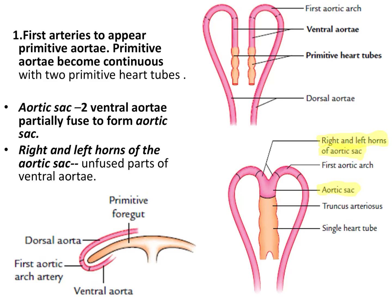The first arteries which develop in our body are the primitive aorta. There are two primitive aorta, right and left, and these two primitive aorta are continuous with the primitive heart tube. This primitive aorta is divided by a primitive foregut into dorsal aorta, ventral aorta, and the connecting part is called as the first aortic arch artery.